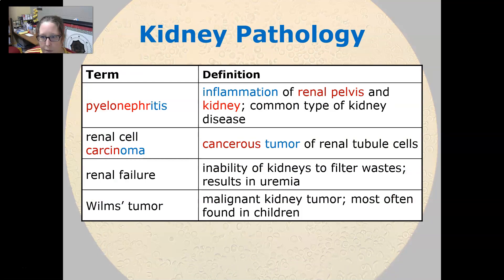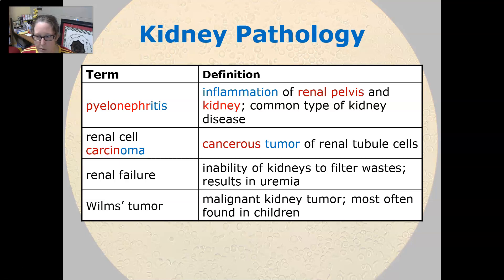Pyelonephritis is inflammation of the renal pelvis and the kidney; it is a common type of kidney disease. Renal cell carcinoma is a cancerous tumor of the renal tubule cells. Renal failure is the inability of the kidneys to filter waste, and it results in uremia, which is the backup of waste in the bloodstream.